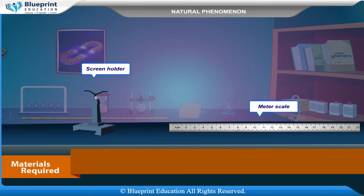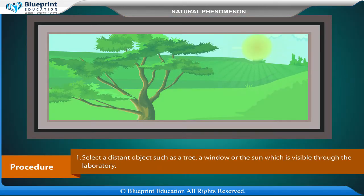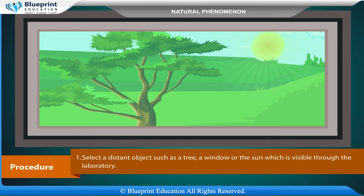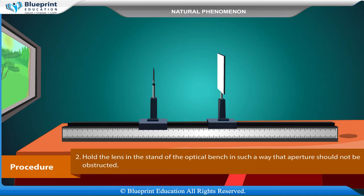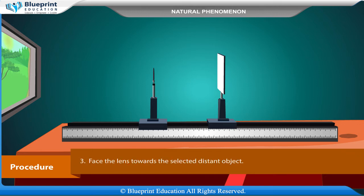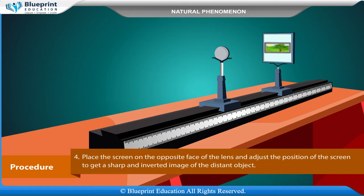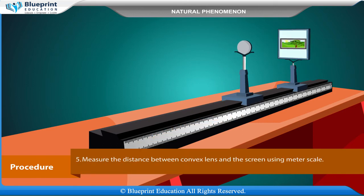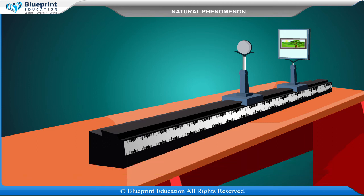Procedure: Select a distant object such as a tree, a window, or the sun, which is visible through the laboratory. Hold the lens in the stand of the optical bench in such a way that the aperture should not be obstructed. Face the lens towards the selected distant object. Place the screen on the opposite face of the lens and adjust the position of the screen to get a sharp and inverted image of the distant object. Measure the distance between the convex lens and the screen using a meter scale, and record your observation in the observation table.